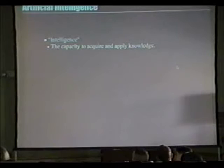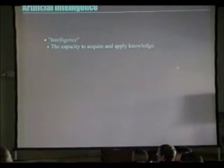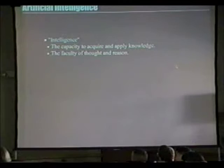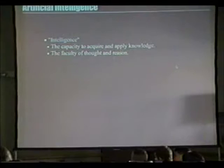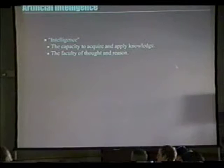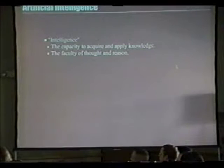Intelligence is defined as the capacity to acquire and apply knowledge, and the faculty of thought and reason — both of which can be defined in software. You can have something automated that takes care of a human function we would normally be doing, like if you're doing a pen test and you are exploring the boundaries of some network host-based exploitation.